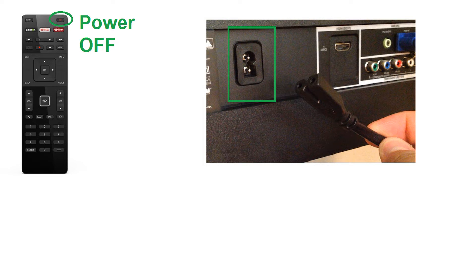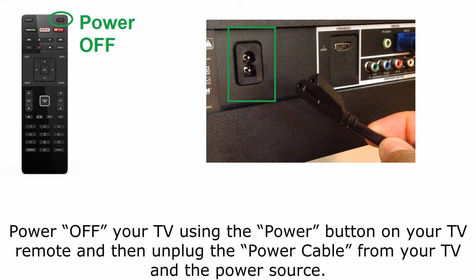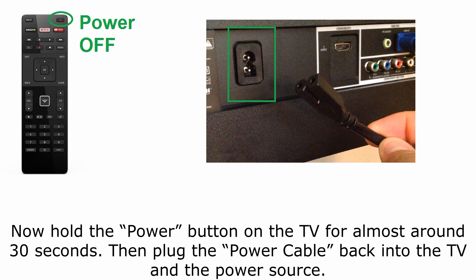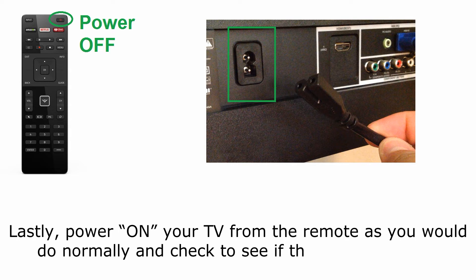If the Soft Power Cycle option does not work for you, you can try implementing these steps. Power off your TV using the power button on your TV remote and then unplug the power cable from your TV and the power source. Now hold the power button on the TV for almost around 30 seconds. Then plug the power cable back into the TV and the power source. Lastly, power on your TV from the remote as you would normally and check to see if the error got fixed.